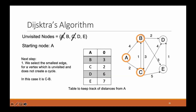Next we select the smallest edge for an unvisited vertex that does not create a cycle. In this case it is CB, which has a cost of one — the smallest available. So we go to B.